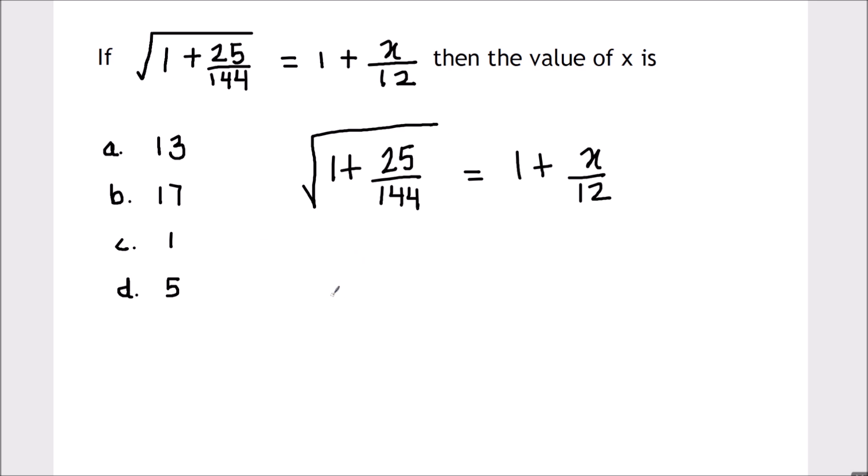So let's take the LCM 144. This is going to be 144 plus 25, whole square root. The right hand side will be as is, 1 plus x upon 12.